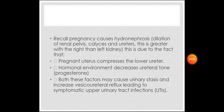Hydronephrosis is greater with the right than the left kidney. This is due to the fact that the pregnant uterus compresses the lower ureter, and the hormonal environment decreases ureteral tone due to progesterone. Both these factors may cause urinary stasis and increase vesicoureteral reflux, leading to symptomatic upper urinary tract infections.